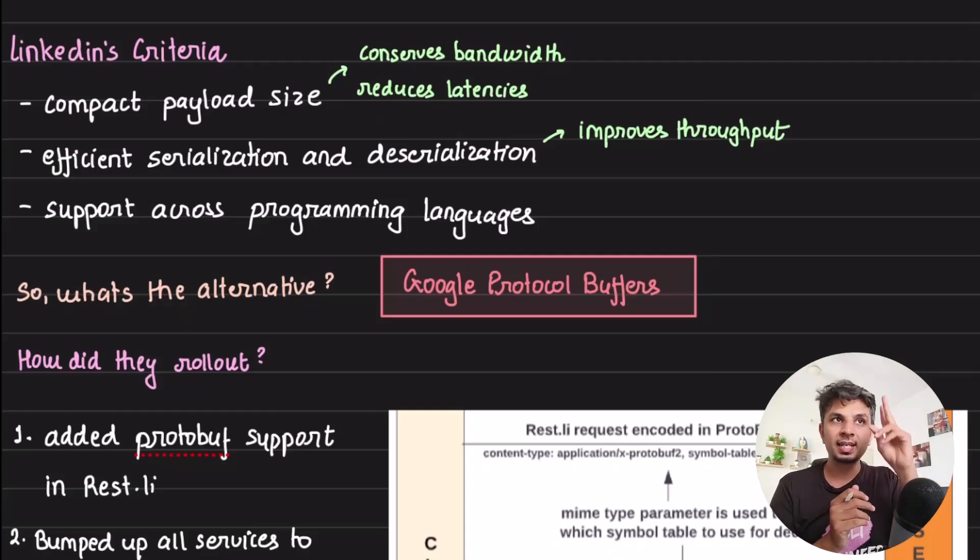Second is they wanted efficient serialization and deserialization. They should not be waiting for an entire document to come to tell what it is. The idea is the serialization and deserialization should be extremely fast and efficient, because the quicker you do serialization and deserialization, you would be able to process that much data faster. So this would improve your throughput.